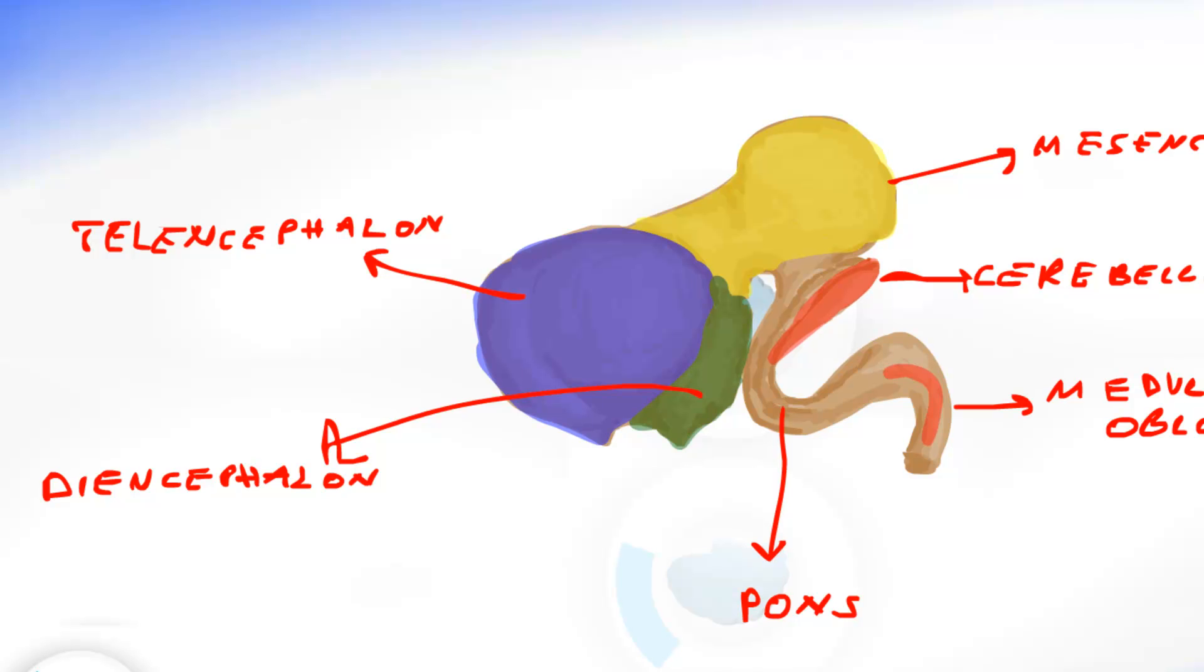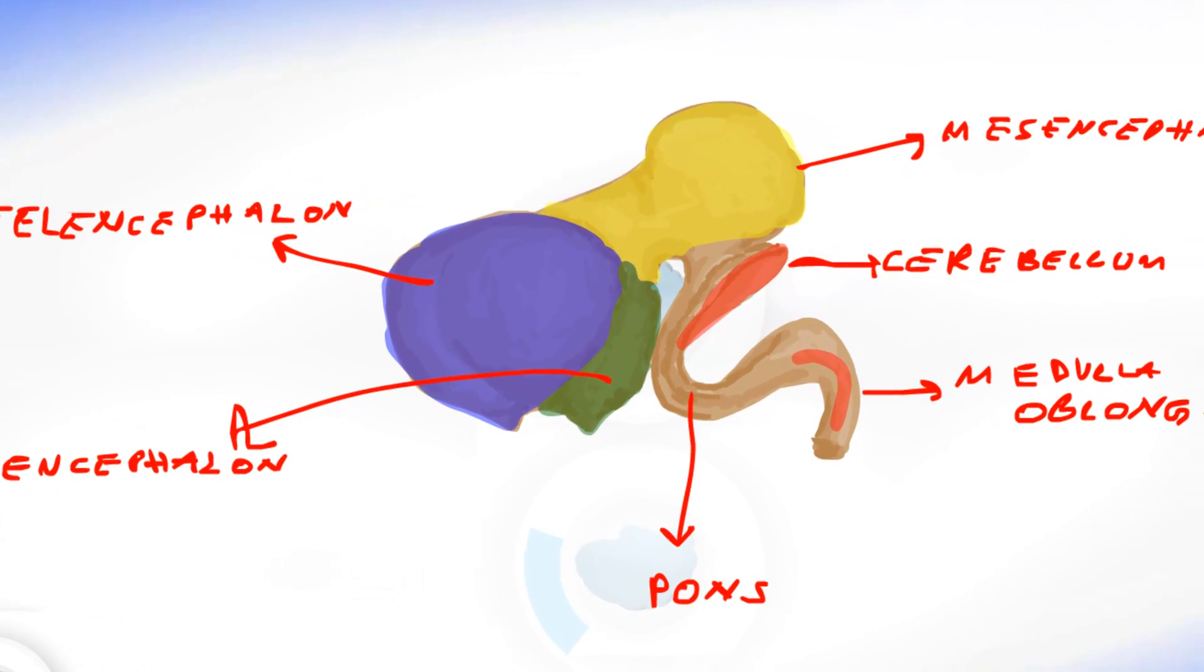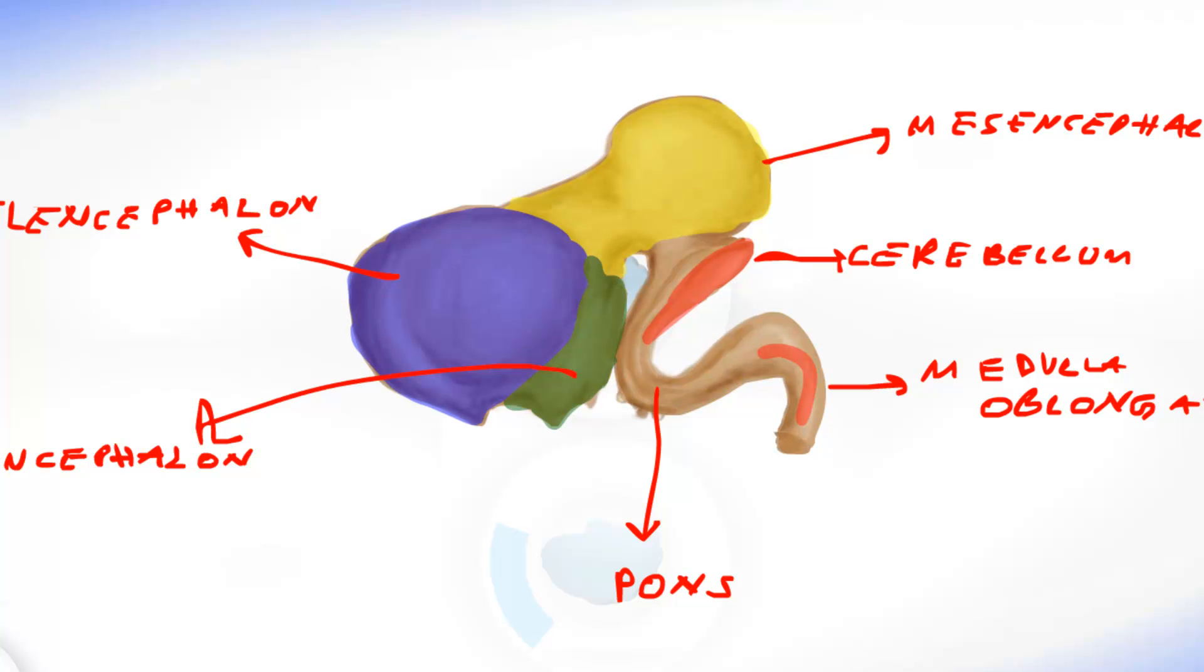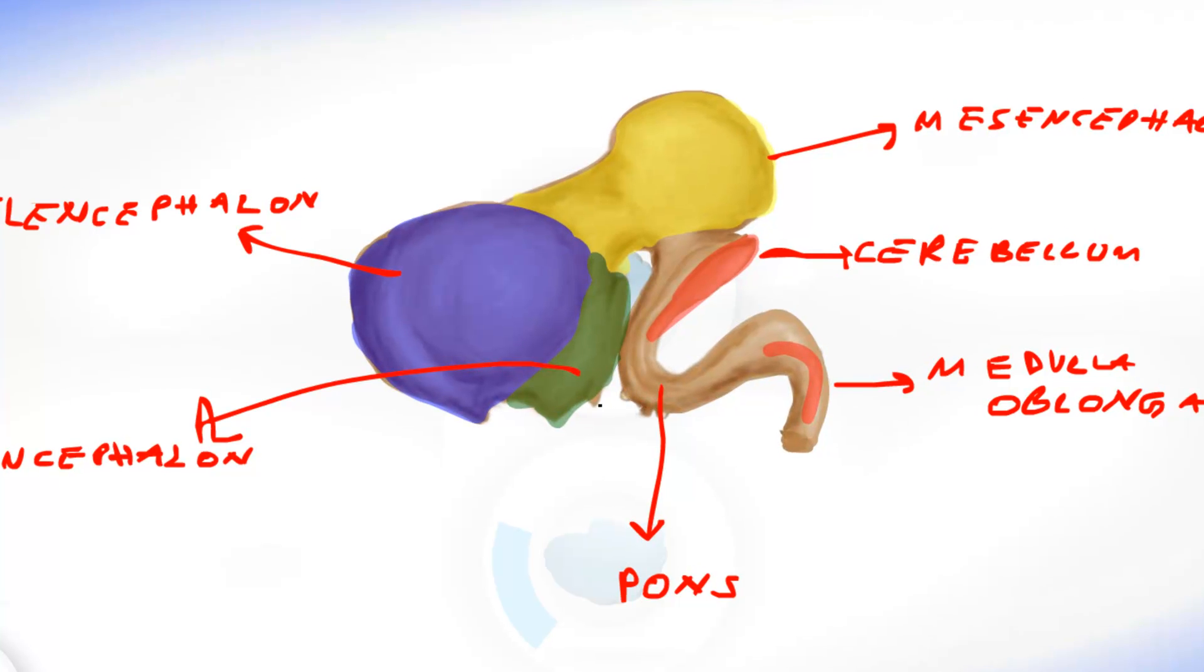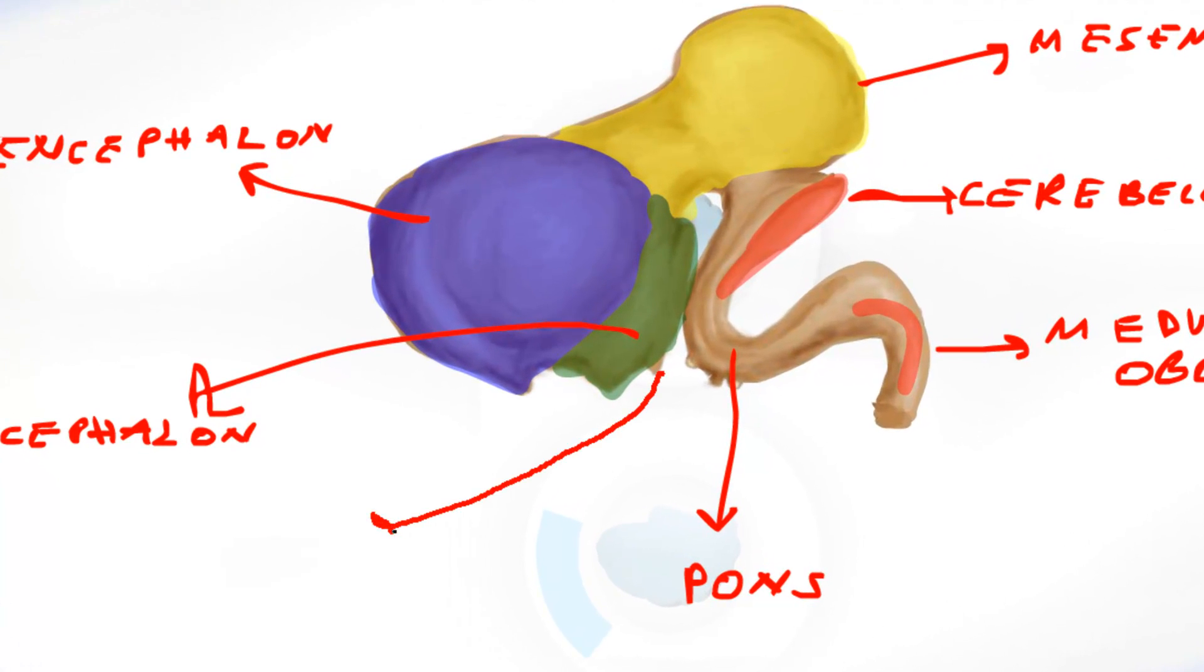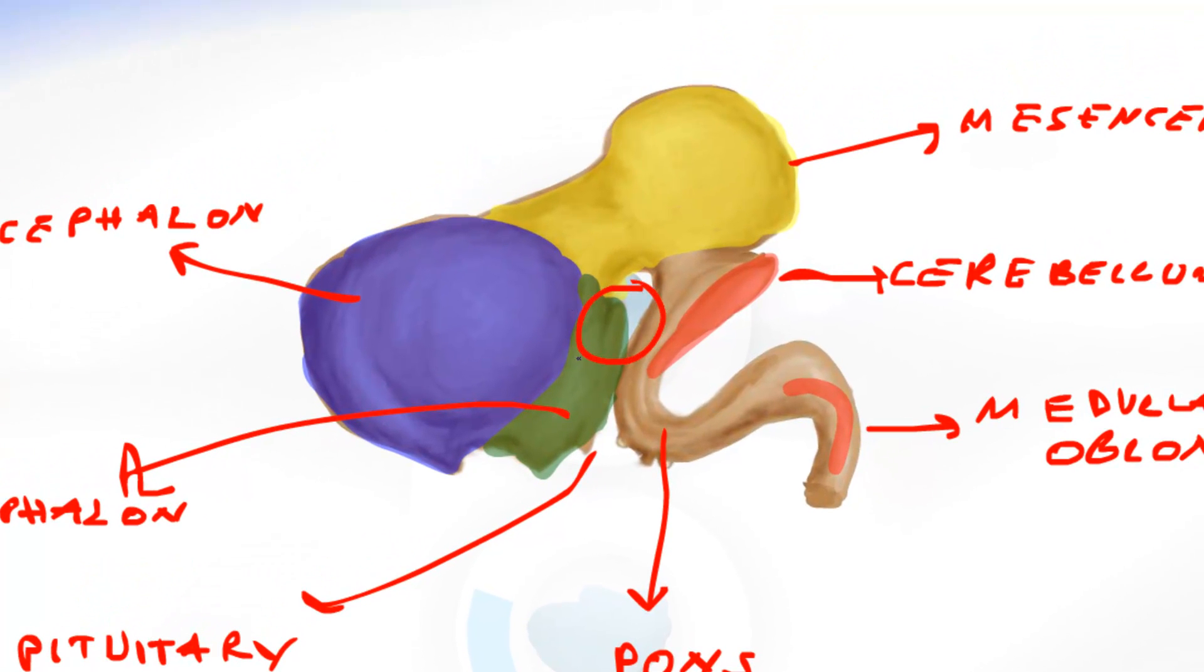Then there are also other structures that are easy to notice in the third month of pregnancy. And that's over here. One of them is the pituitary gland. And over here it's possible to notice the mammillary body is being developed.